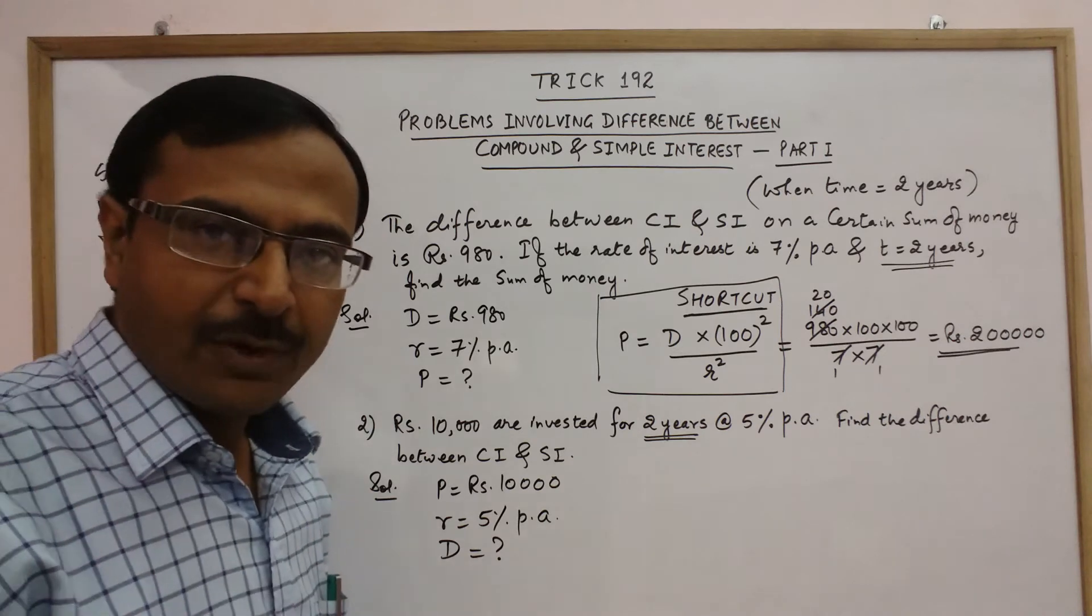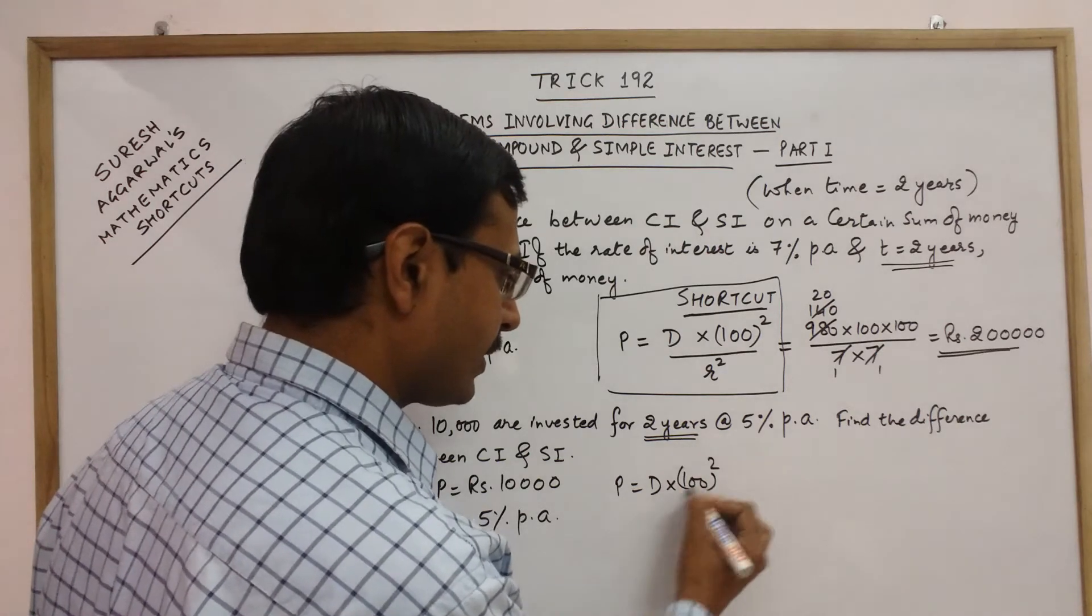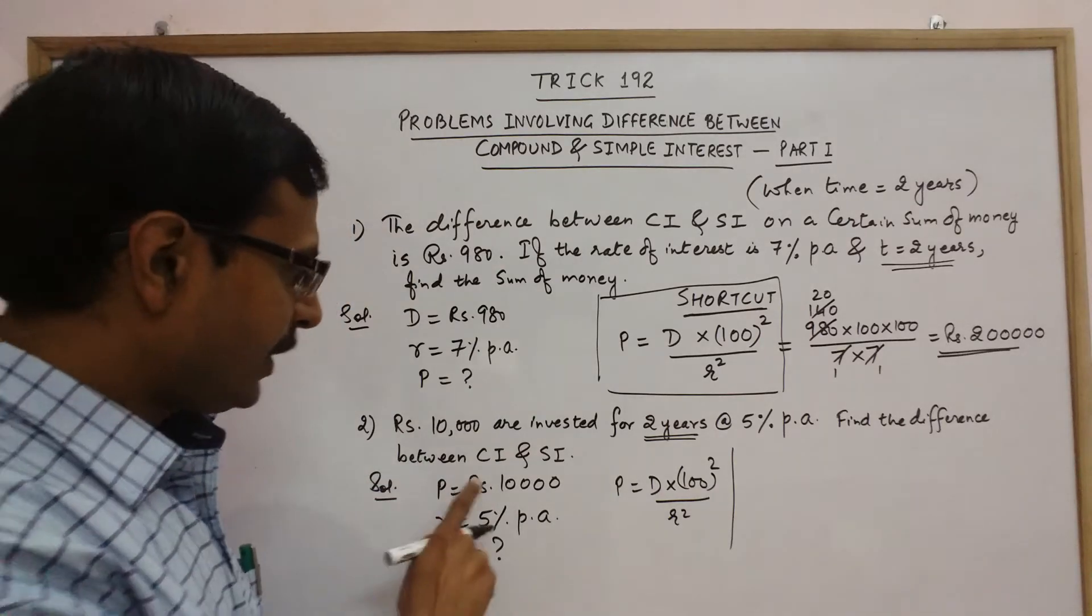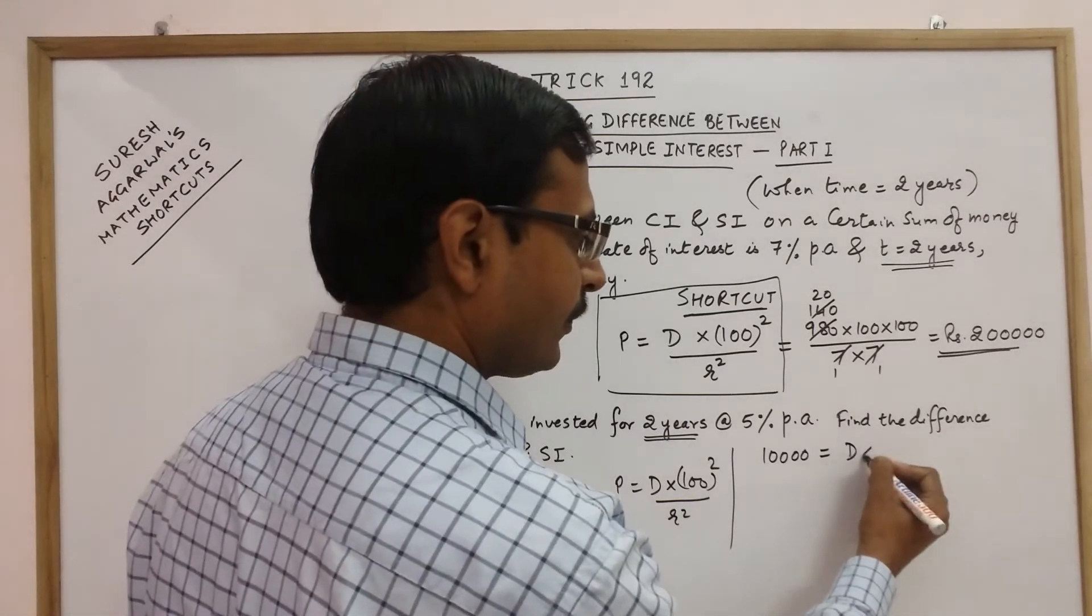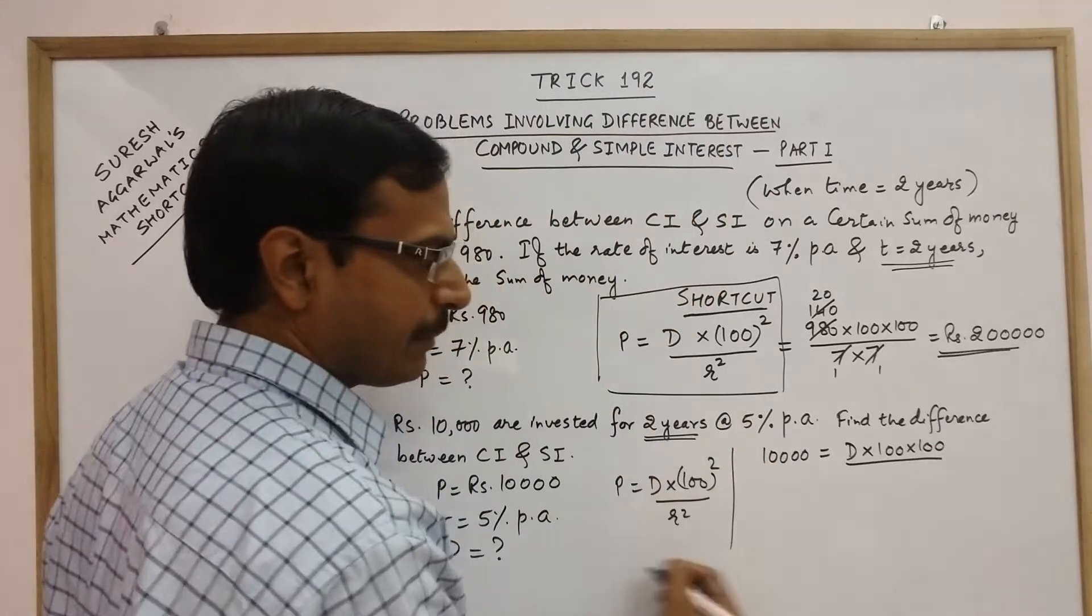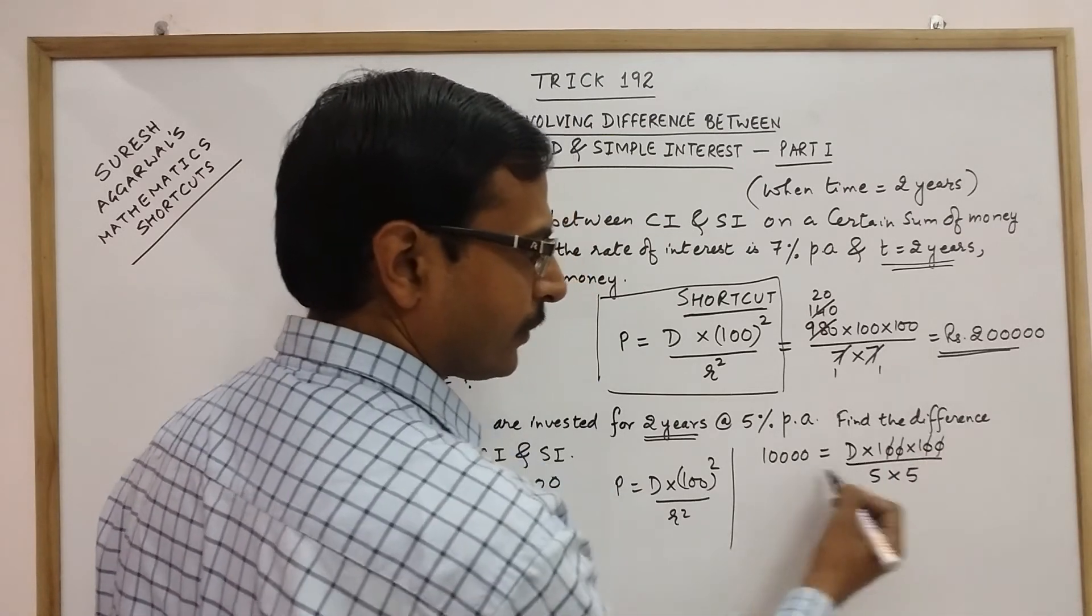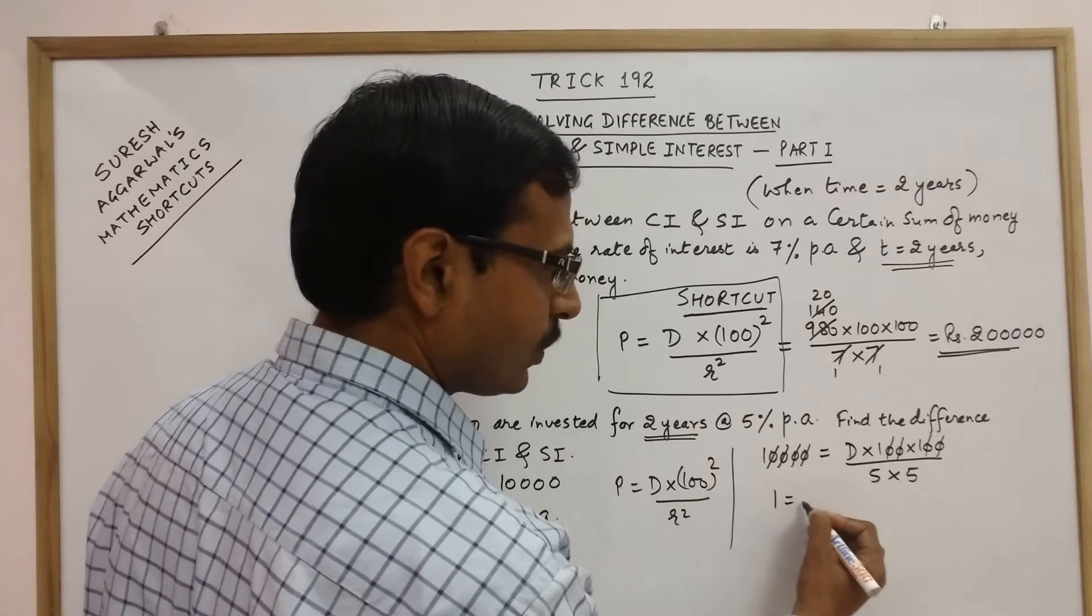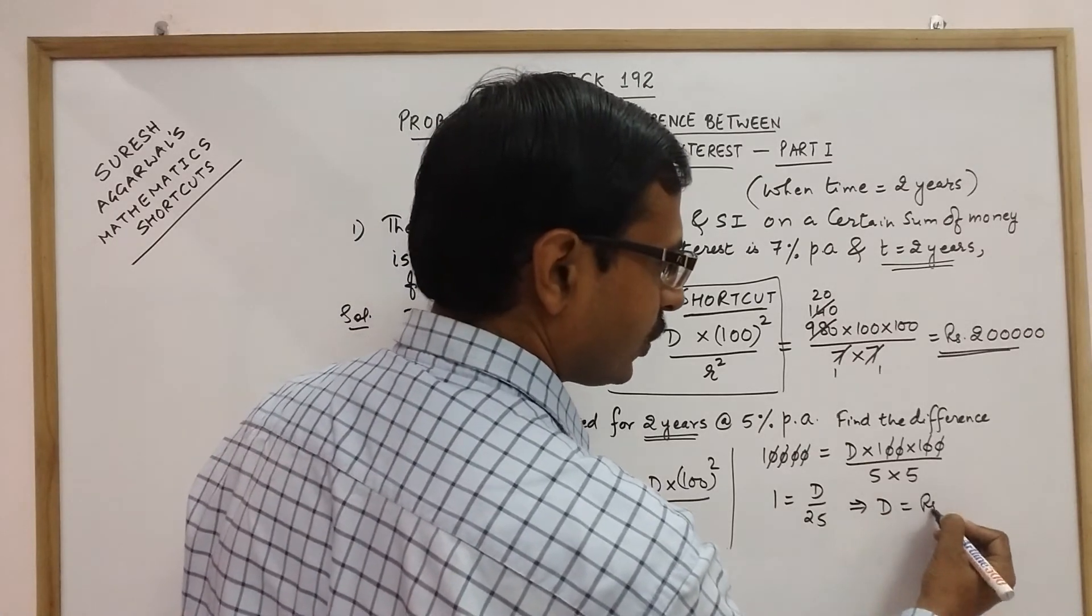Again use the same formula: P equal to D into 100 square upon R square. Now P given is 10,000 equals D we need to find, into 100 into 100 upon R is 5%, so 5 into 5. Here you see 4 zeros, 4 zeros cancel out. So this becomes 1 is equal to D upon 25. Very simple, D comes out to be rupees 25.